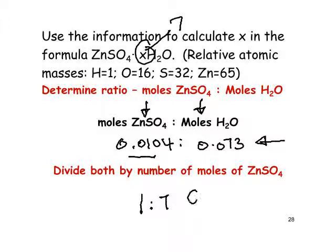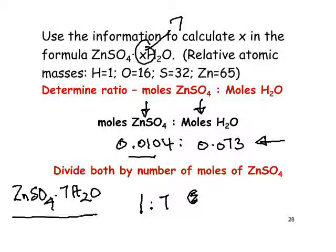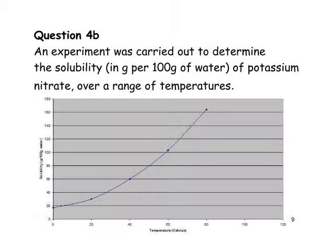The formula is ZnSO4·7H2O, known as zinc sulfate heptahydrate — heptagon being a seven-sided figure, so heptahydrate means seven water molecules. That's the first of three completely different parts of question 2. Let's move to the next part.